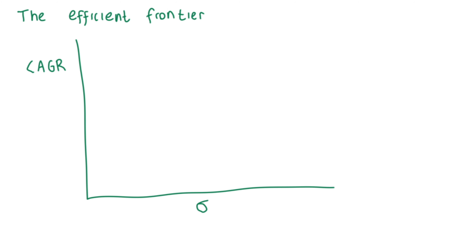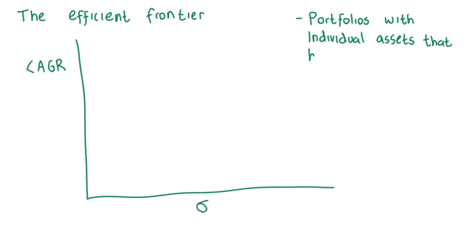Next, we're going to talk about the efficient frontier. The efficient frontier rates portfolios on a scale, using expected return on the y-axis versus risk on the x-axis. The compound annual growth rate, or CAGR, of an investment is commonly used as the return component, while annualized standard deviation — otherwise known as volatility of the CAGR — depicts the risk metric.